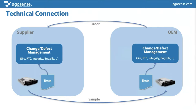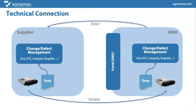The OEM has their own change or defect management system, and all things they detect they want to bring back to the supplier. Usually they have a portal solution, sometimes only a simple SFTP server, where they place data in a certain XML format or you can retrieve it via a REST API. Sometimes they also offer a web interface where you can manually look at the issues found — but ideally you'd transport these errors directly into your own system.